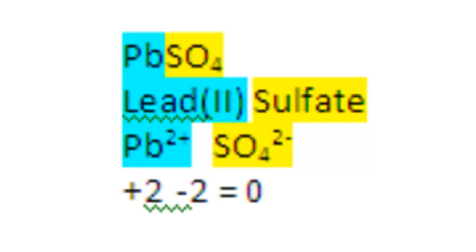You have to get used to, number one, identifying it as an ionic compound, metal, non-metal. Once you've done that, identify the cation, which is lead, and the anion, in this case, is SO4 as a group. SO4 2 minus, if you look at a polyatomic ion list.